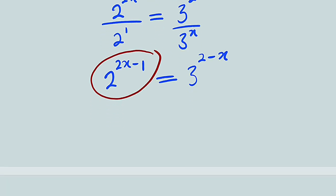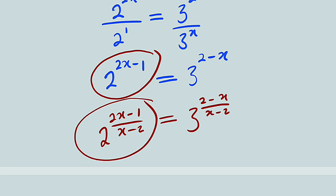So let's do that. Whatever you do to one side, you have to do it to the other side. So on the left hand side we have 2 to the power of (2x-1) divided by (x-2) as required. And this is equal to 3 to the power of (2-x) divided by (x-2). So this is what we are looking for exactly.